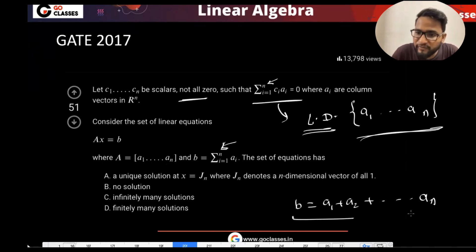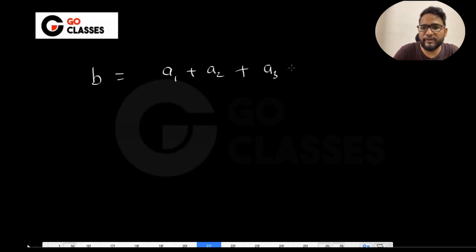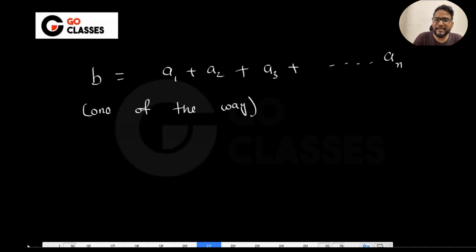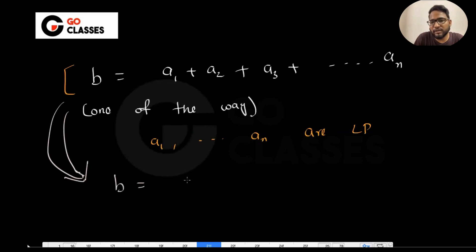Now, is there only one way to represent B? They are saying that there is a way to represent B as a linear combination of columns of A, like they have given that way. This is just one of the ways. On top of that, they are saying these columns a_1 to a_n are linearly dependent. So is this the only way, or can there be other ways also? If they are linearly dependent, then there will always be multiple ways — infinitely many possible ways.